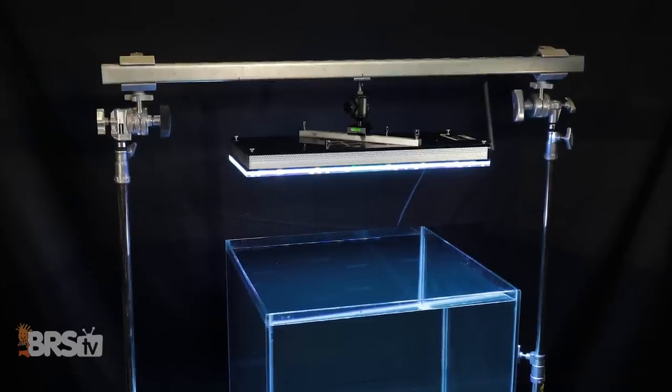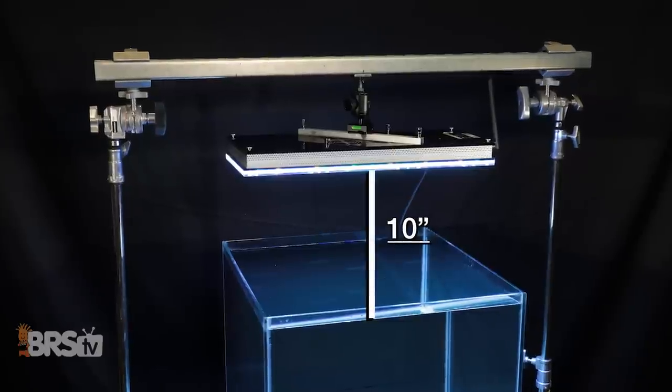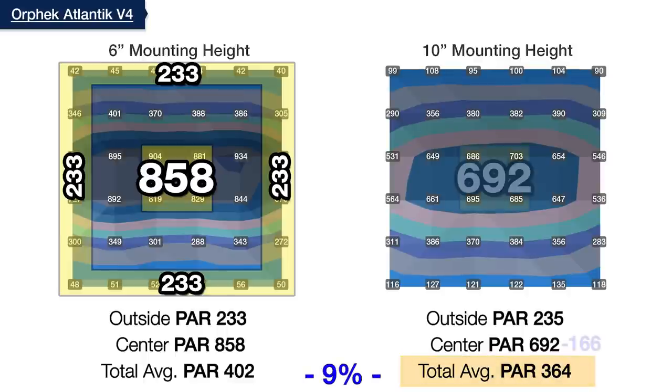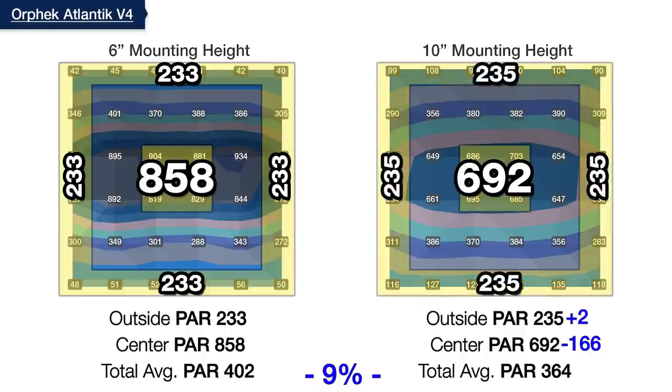Again, we did test the light inch by inch, raising it upwards, so let's check in at 10 inches off the top of the water, where there's now a total average PAR of 364, meaning a 9% loss of light efficiency from where we started. Yet we've cooled down the center to 692 and increased those extreme corners of our testing area by double or more, which shows that the light is now being spread out more evenly across all 36 data points.